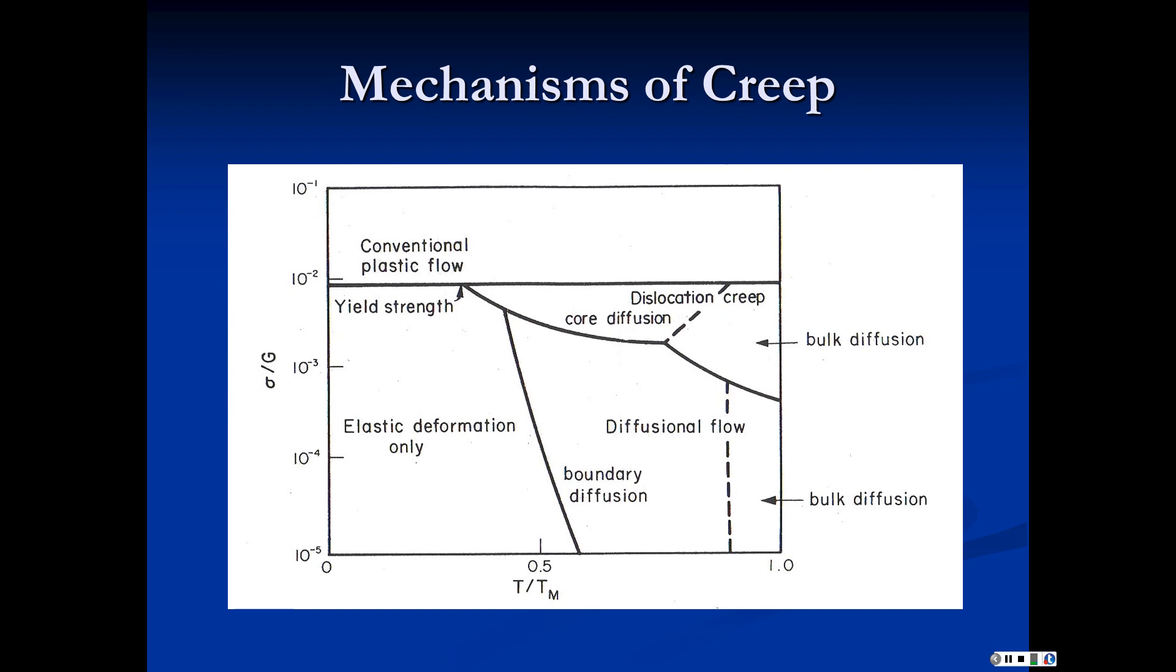We can map those mechanisms with this wonderful universal map. It's good for all polycrystalline materials. This is normalized - the applied stress divided by the shear modulus with no units, and the actual temperature divided by the melting temperature of the material. Both must be in Kelvin. At one, we are at the melting temperature and obviously we have no more material. This is a map of the mechanisms of deformation. At low temperatures and low stresses, we have elastic deformation. At the yield strength, we get conventional plastic flow. This is where we've been working in our stress-strain curves.